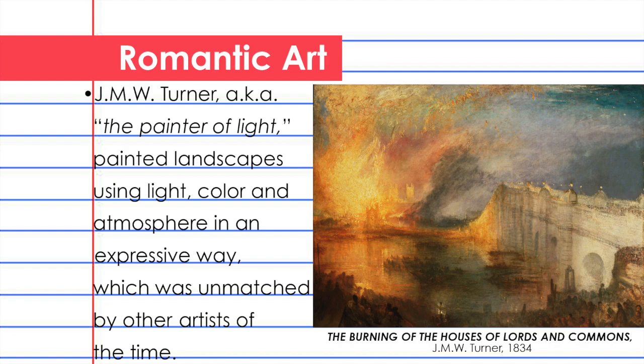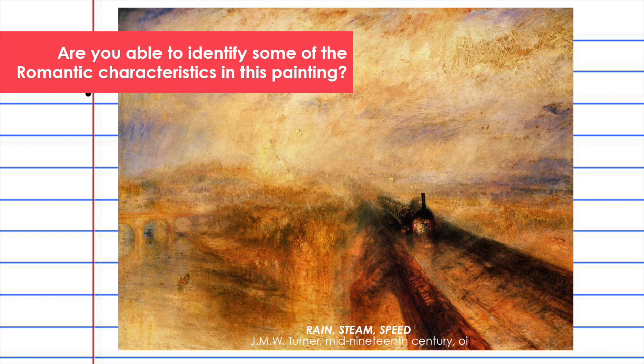One of the most famous artists during the Romantic period was Joseph Mallard William Turner, also known as the Painter of Light. He painted landscapes using light, color, and atmosphere in an expressive way which was unmatched by other artists of the time. Here you see the Burning of the Houses of Lords and Commons by Turner, painted in 1834.